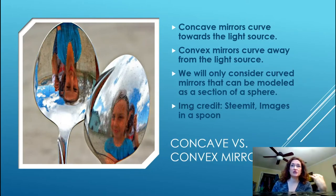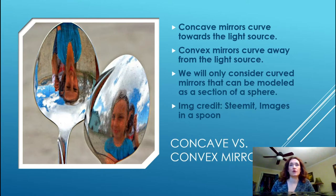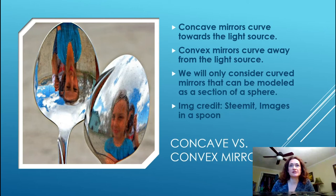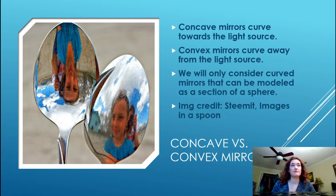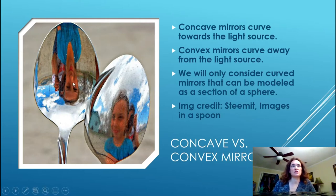Convex mirrors are defined as curving away from the light source. There are all kinds of mirror shapes, but in this lecture we're only going to consider curved mirrors that can be modeled as a section of a sphere. Here I'm showing an example of some concave and convex mirrors.